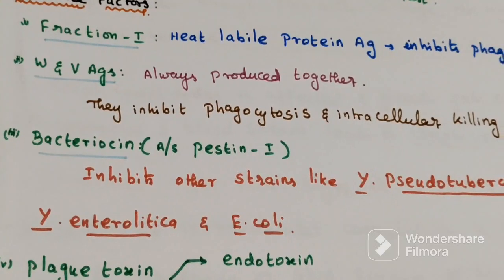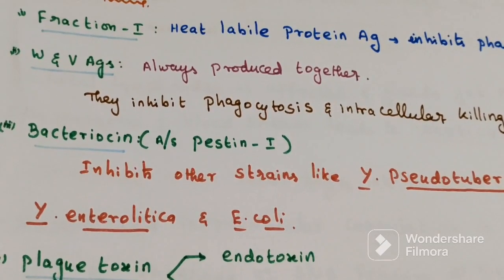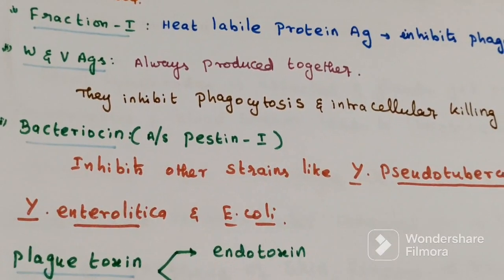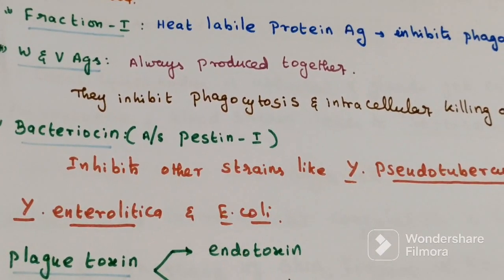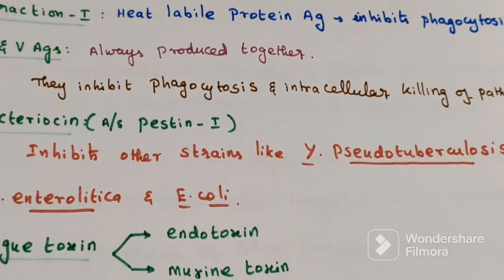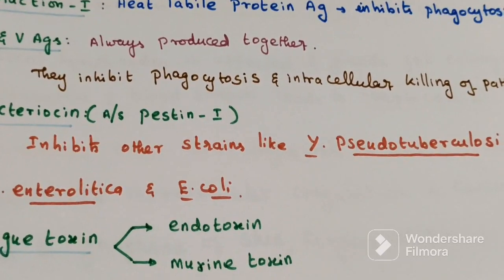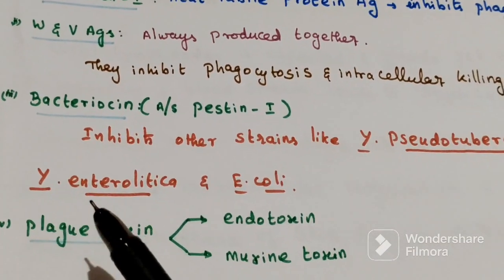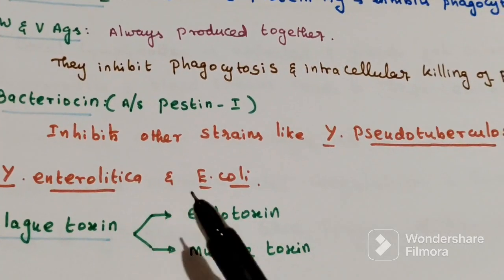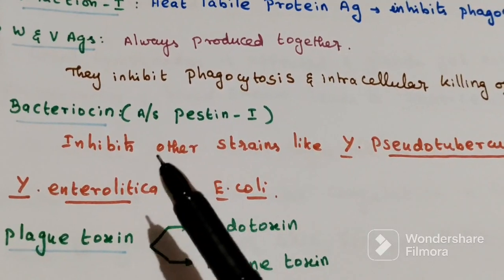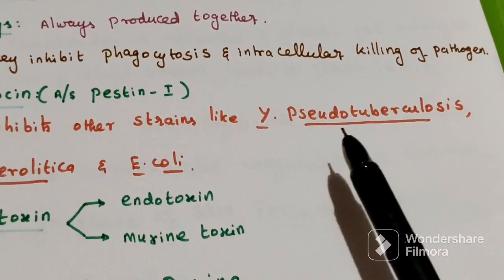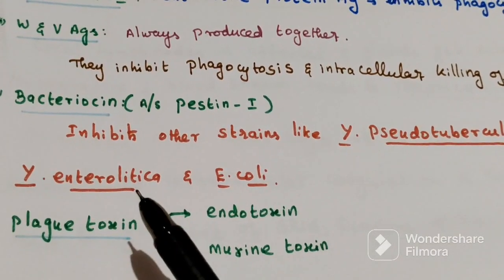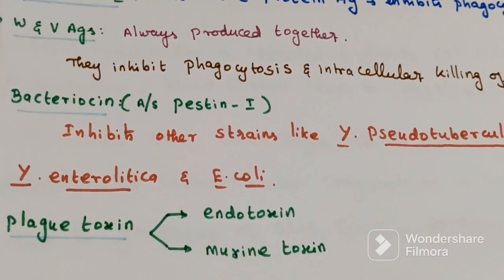Third one is Bacteriocin, also called Pesticin I. This will inhibit other strains like Yersinia pseudotuberculosis, Yersinia enterocolitica, and E. coli.